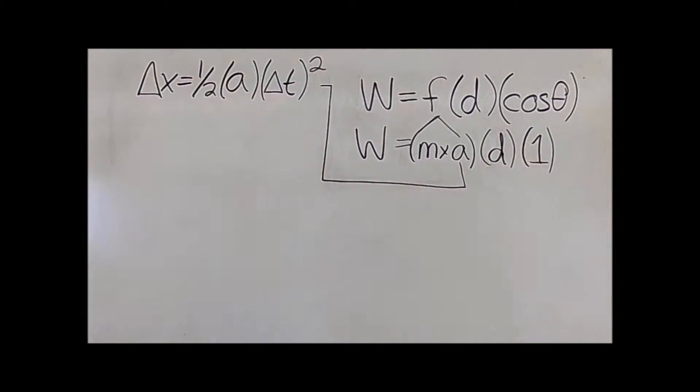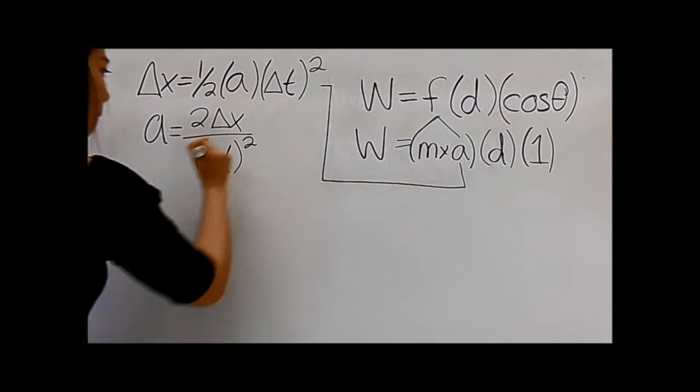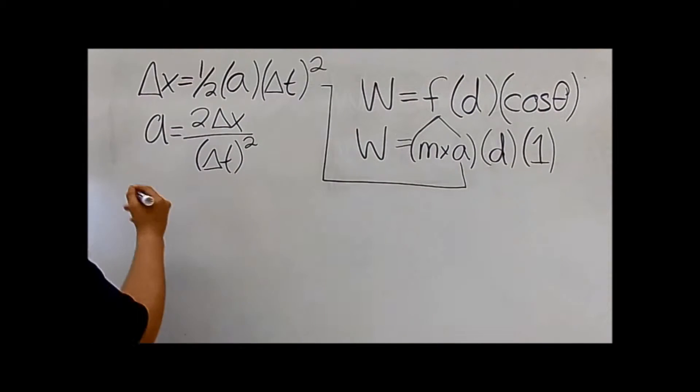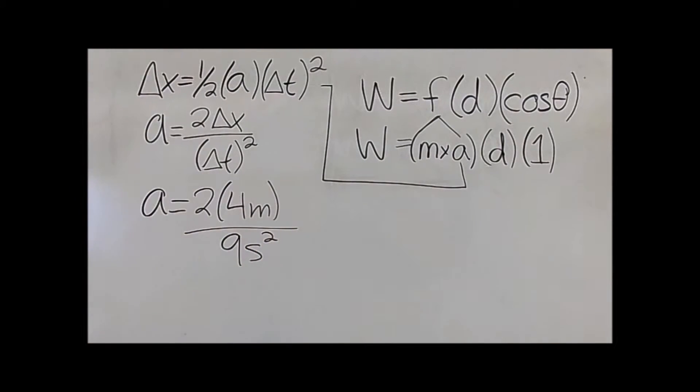We multiply by 2, then divide the whole equation by the change in time squared, or delta t squared. 2 times 4 is 8, divided by 9 squared (81), equals 0.1.